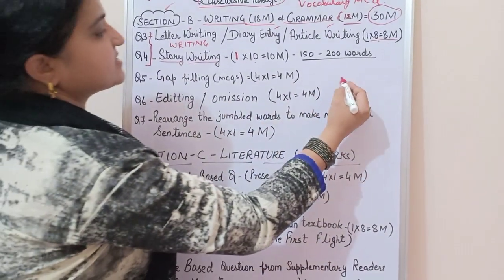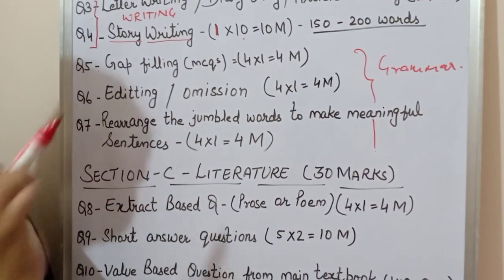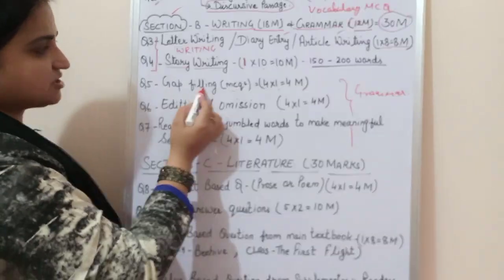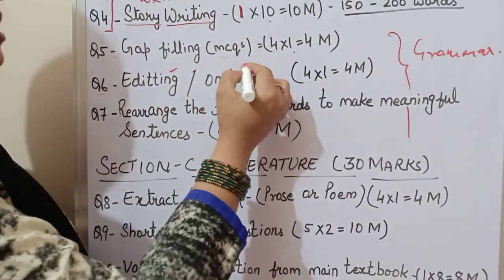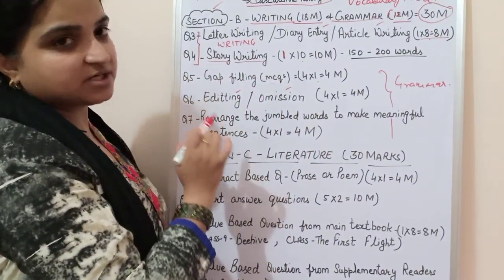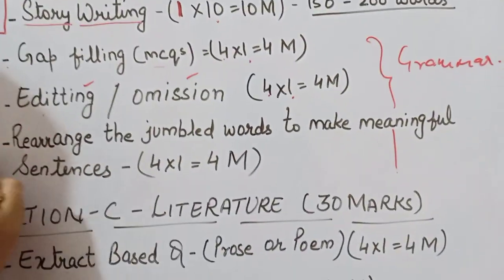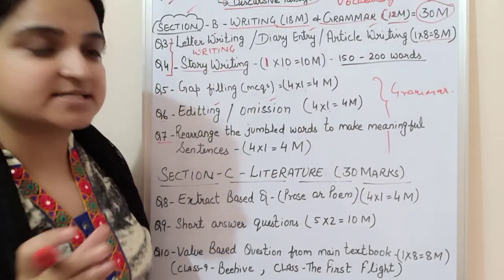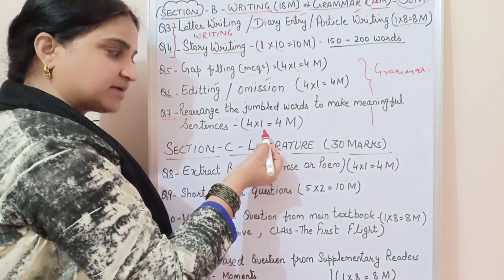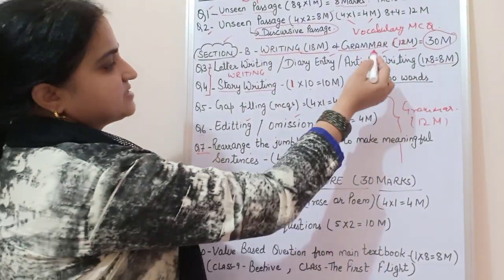Questions five, six, and seven cover Grammar. Question five is gap filling — fill in the blanks — and it is MCQ-based. There are four questions of one mark each, totalling four marks. Question six is editing or omission — you will get only one of these — also four questions of one mark each, totalling four marks. Question seven has jumbled words which you rearrange to make meaningful sentences — again four questions of one mark each, four marks. So four plus four plus four equals twelve marks, completing Section B.